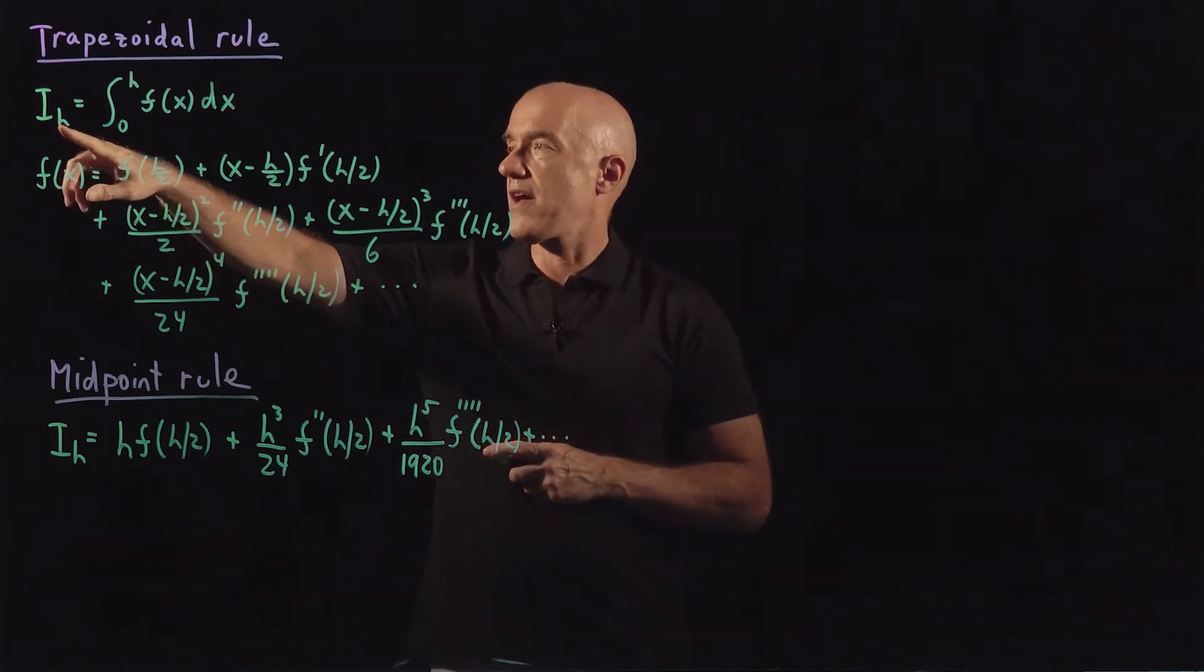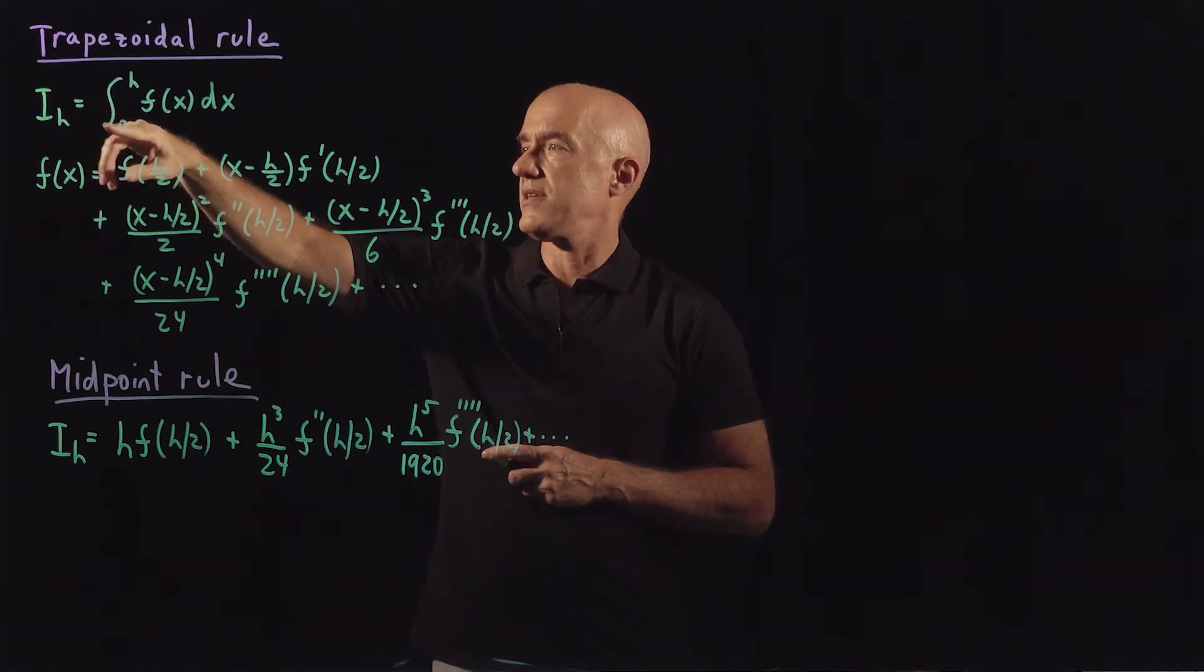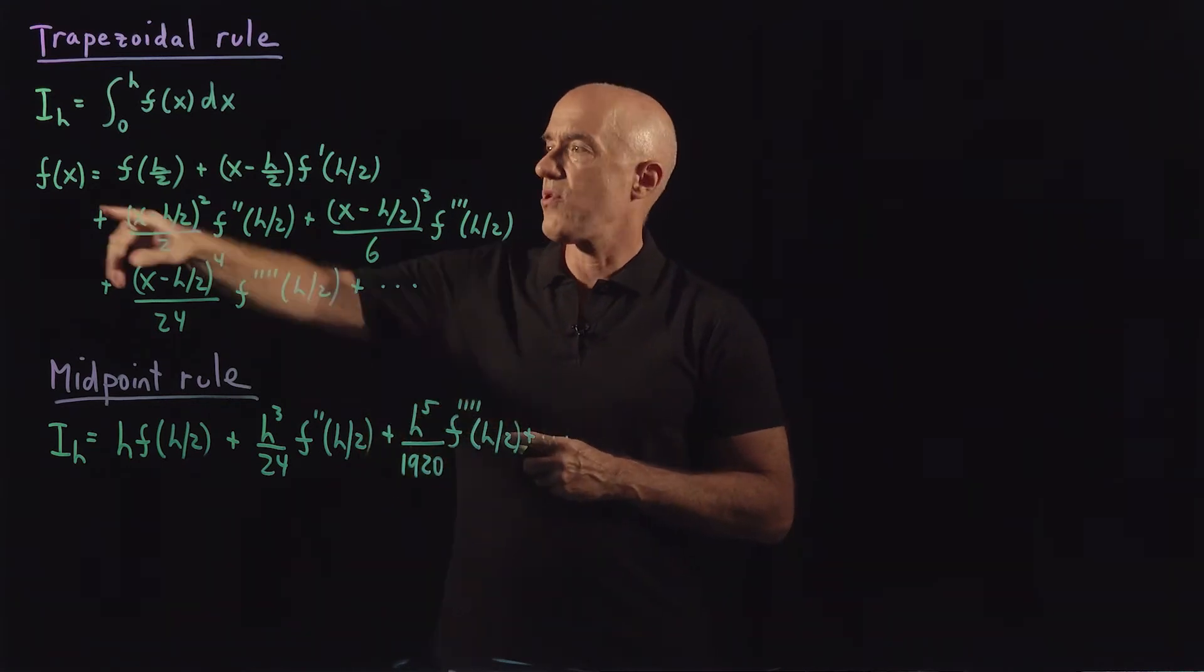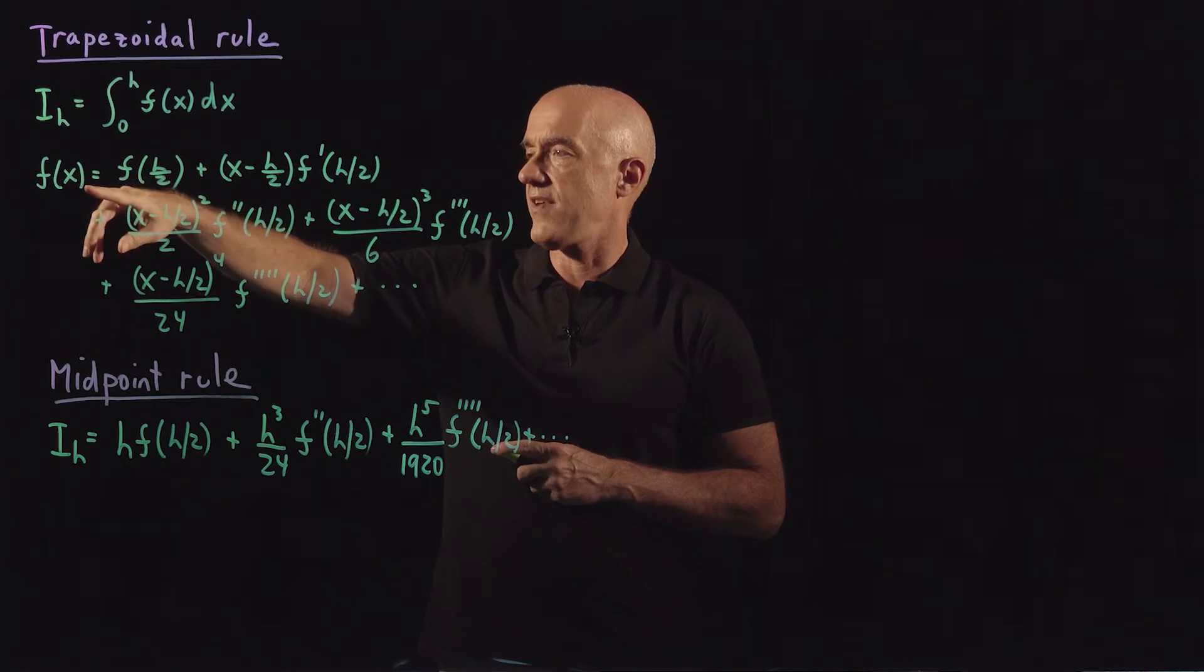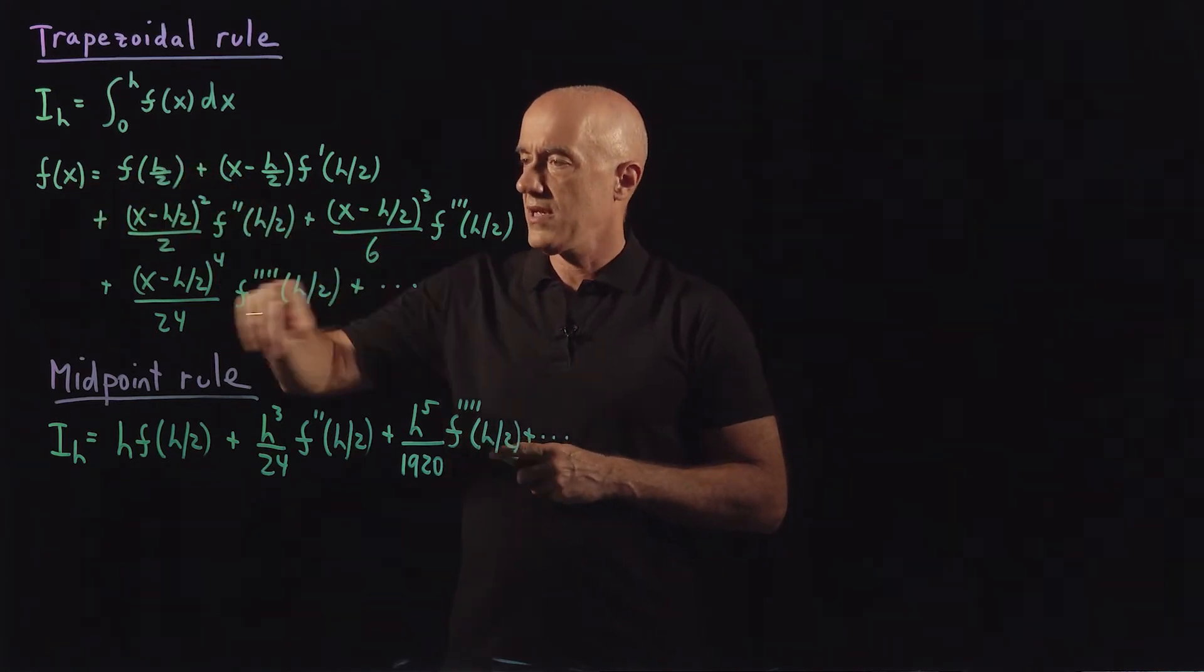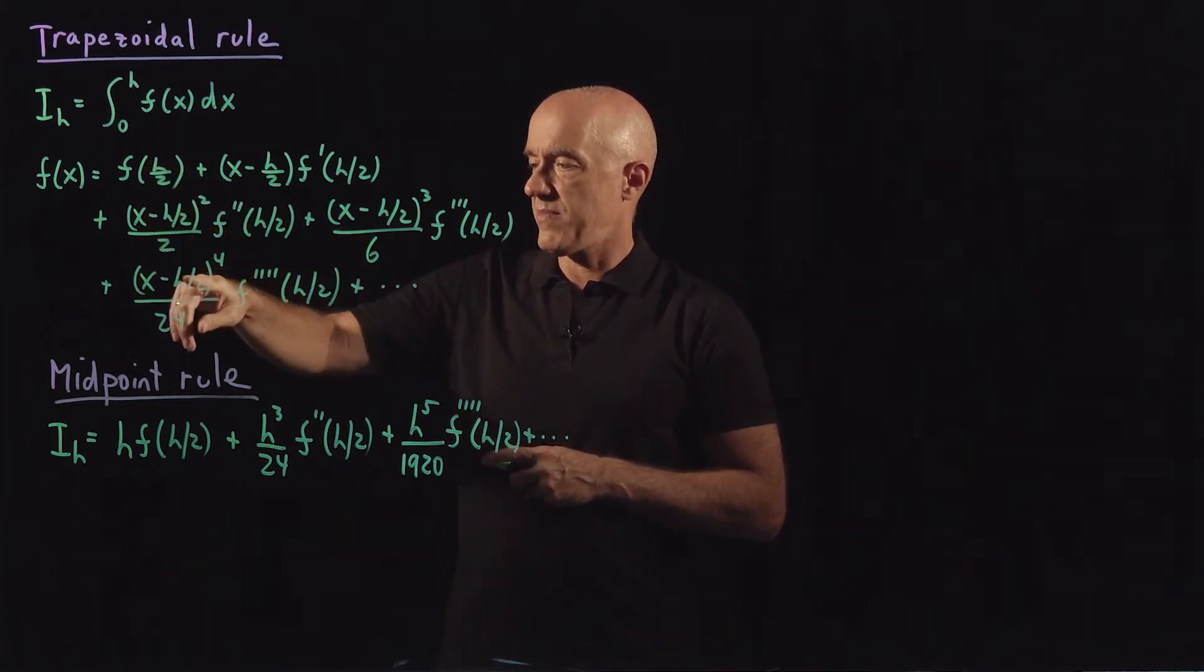Remember we're deriving elementary formulas. So i sub h is the integral from 0 to h of f(x) dx. We derive the midpoint rule by doing a Taylor series expansion of f(x) about the point x equals h over 2.